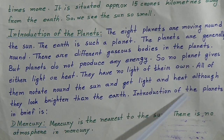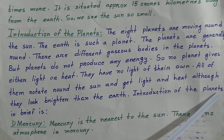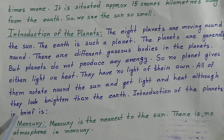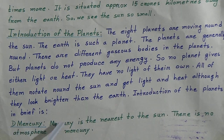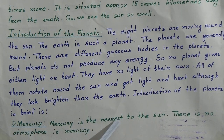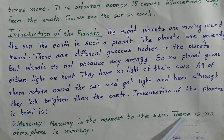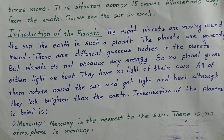Number 1: Mercury. Mercury is the nearest to the sun. There is no atmosphere in Mercury.